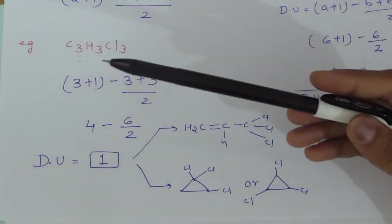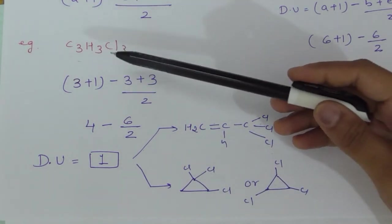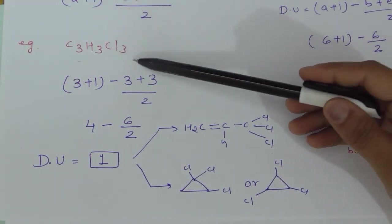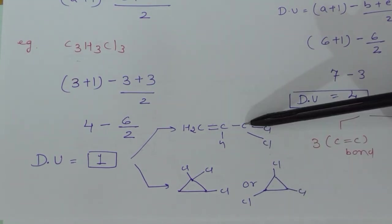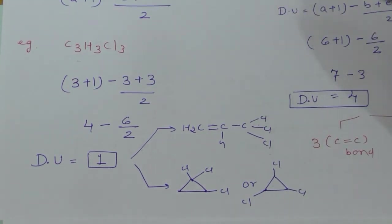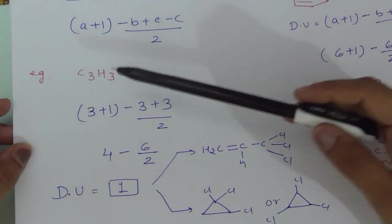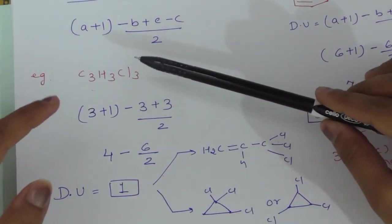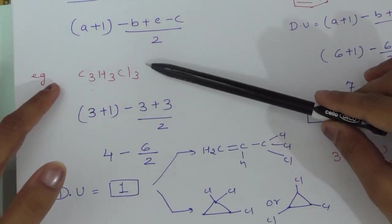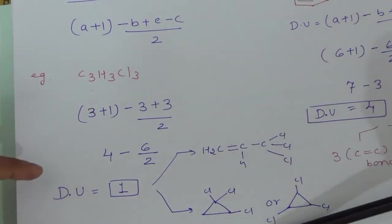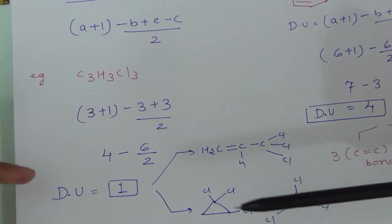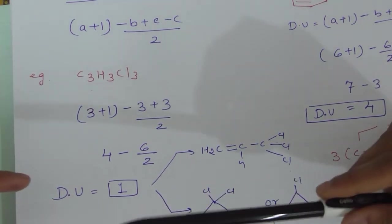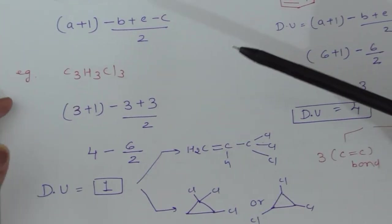So the formula C3H3Cl3 can correspond to multiple structures — the one with a double bond and three halogens clustered at one end, or cyclic structures with halogens at different corners. These are all isomers of the same empirical formula. This is how the degree of unsaturation works in finding possible structures and isomers.